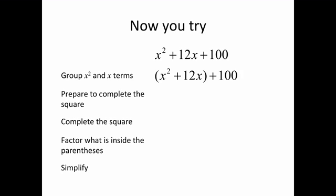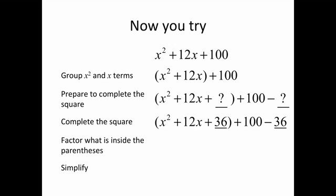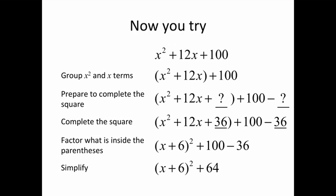Here's what it looks like. You group the first two terms. Prepare to complete the square by leaving those empty spaces. You complete the square by taking half of 12 and squaring it to get 36 — half of 12 is 6, and 6 squared is 36. Add it inside the parentheses, subtract outside. Factor the parentheses to x plus 6 squared. Simplify the right-hand term to get x plus 6 squared plus 64.